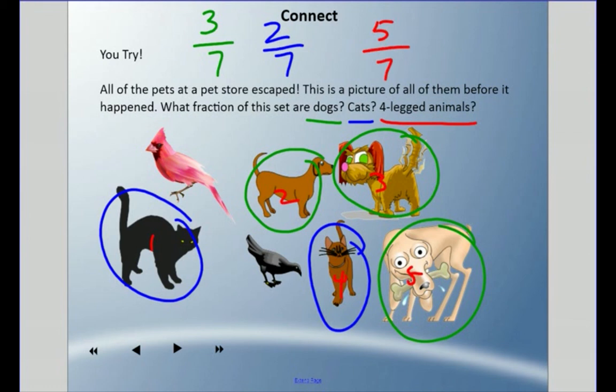Now I didn't ask any questions about birds, but if we had birds, we could say two-sevenths are birds. If we're talking about black things, two-sevenths are black, brown, etc. We can make different fractions up for any set.